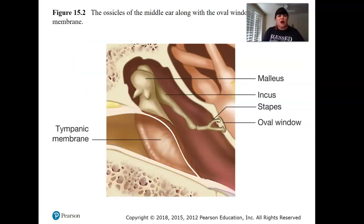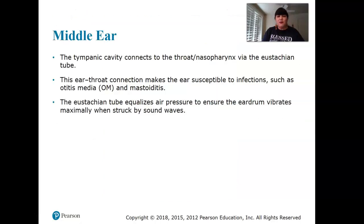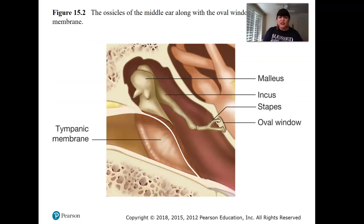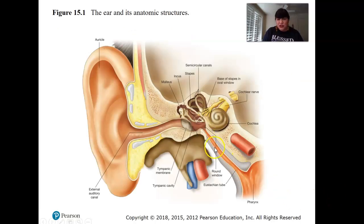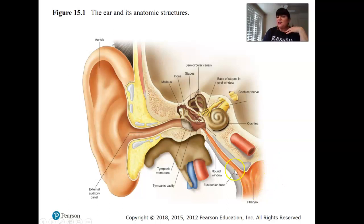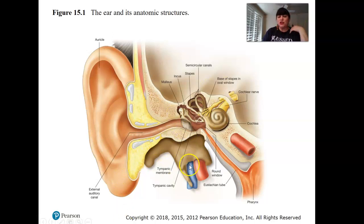The middle ear ossicles — malleus, incus, and stapes — are connected to the throat via the Eustachian tube. If someone is sick with an infection, bacteria can travel up the Eustachian tube and cause an ear infection. Kids are more prone to ear infections because their Eustachian tube is shorter and angled differently.